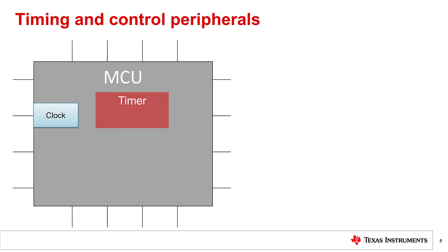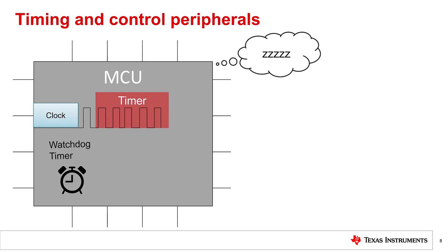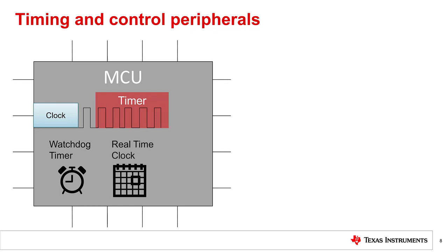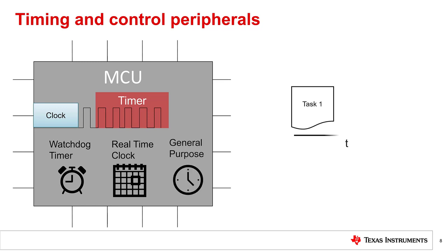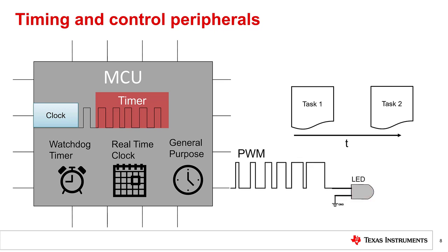Timing and control peripherals are a group of peripherals that are all about keeping time in different ways. Some examples include a watchdog timer, which can wake the MCU when it's not responsive; a real-time clock, which keeps track of time in terms of seconds and can even include a calendar; general purpose timers that can be utilized to tell you when to kick off the next task; and PWMs that you can output to control a multitude of different circuits and systems.